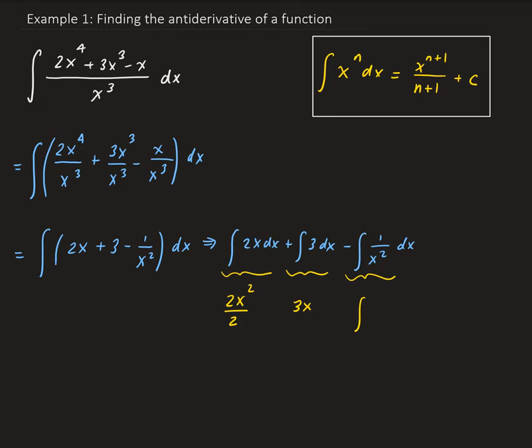that can be written as x to the minus 2 dx. Using the power rule for integration, that equals x to the negative 1 divided by minus 1, which is the same as minus 1 over x. So we have minus, and then a minus 1 over x, so that will turn to a positive.